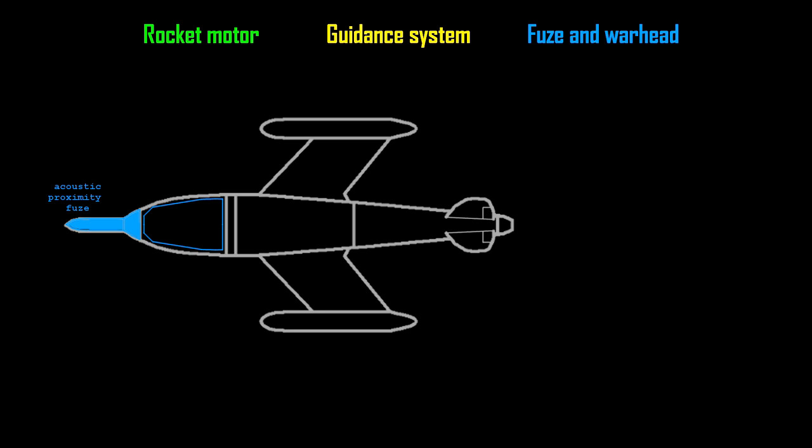The warhead could be exploded by four different fuses. To simplify aiming, the X4 should be able to explode near the target on its own. For this, the acoustic proximity fuse Kranich was developed which reacted to the noise emissions of enemy bombers.